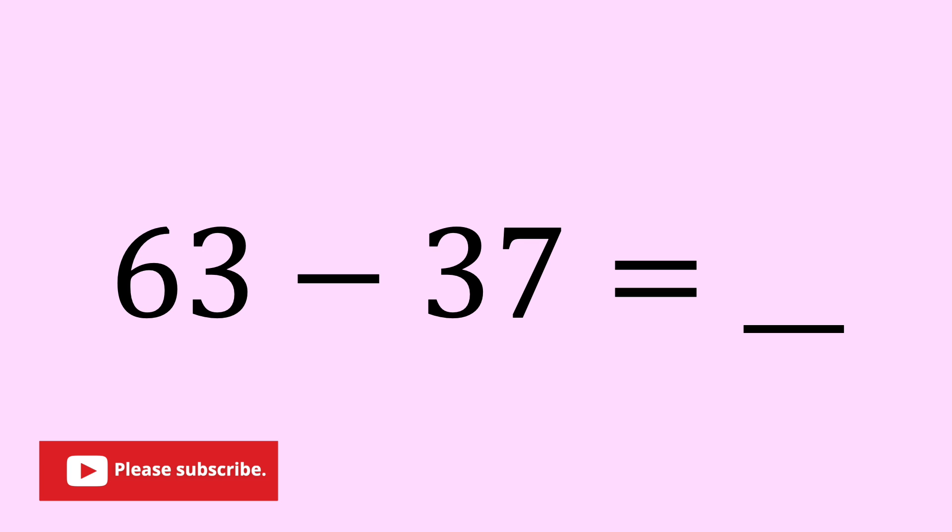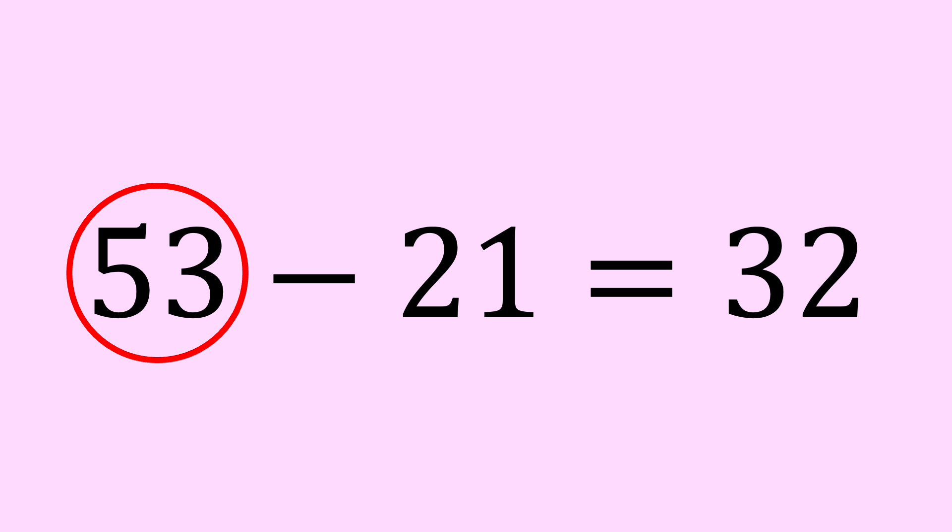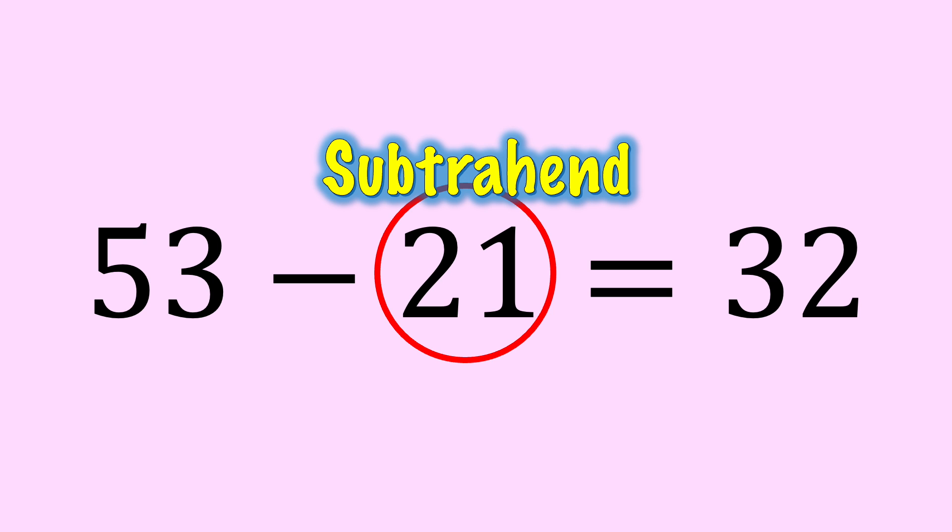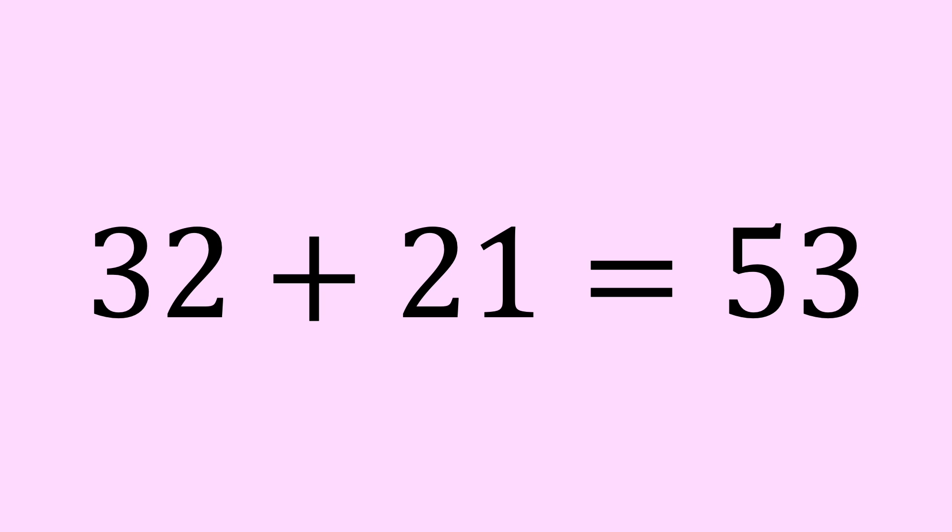63 minus 37 equals blank. First, some vocabulary review. The number we subtract from is the minuend, the number we are subtracting is the subtrahend, and the answer is the difference. When we add, the numbers we add are addends and the answer is the sum.